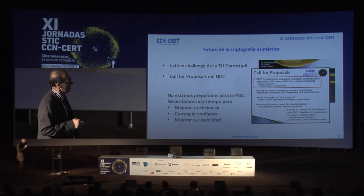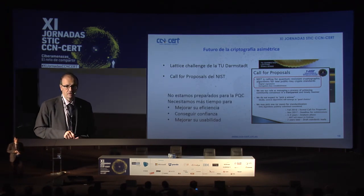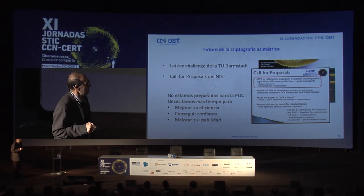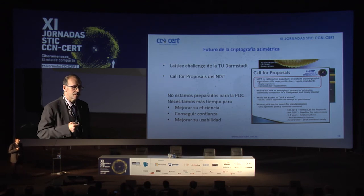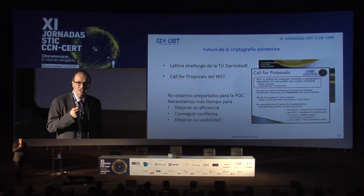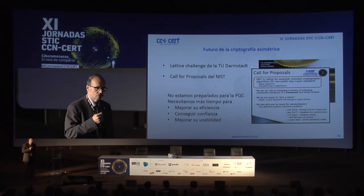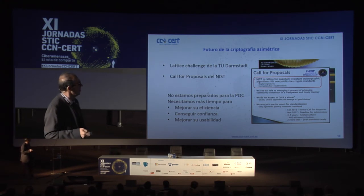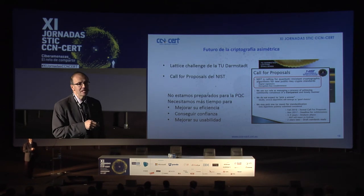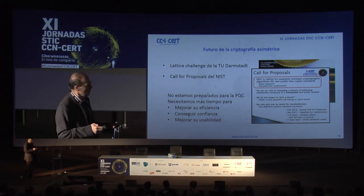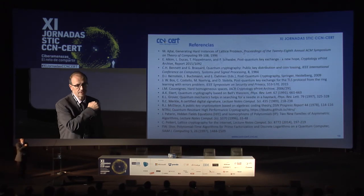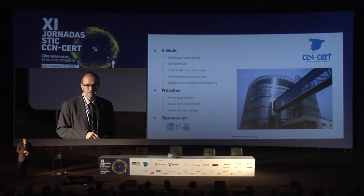Nos pasará lo mismo que cuando pasamos de DES a AES: habrá muchas propuestas por parte de investigadores, y el NIST se dará entre 3 y 5 años para analizar la seguridad de estos criptosistemas. Se calcula que unos dos años después, es decir, aproximadamente para 2025-2027, puede que tengamos un primer borrador de un estándar de criptografía invulnerable a los sistemas cuánticos. En definitiva, no estamos preparados todavía para la criptografía poscuántica; necesitamos más tiempo para mejorar eficiencia, reducir tamaños de clave, demostrar seguridad y mejorar la usabilidad.